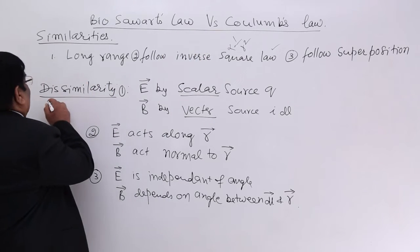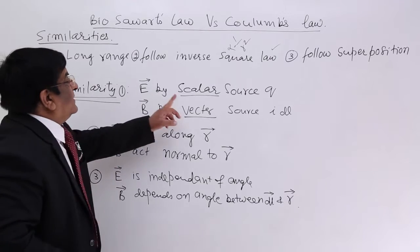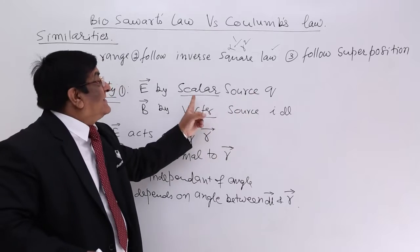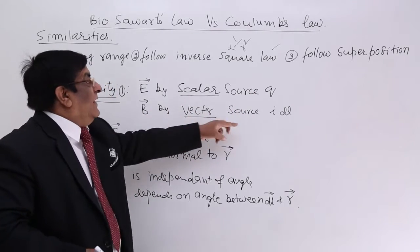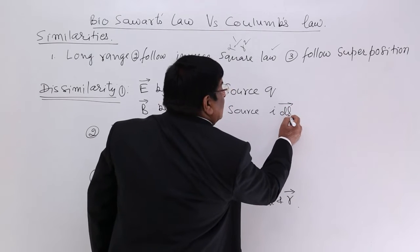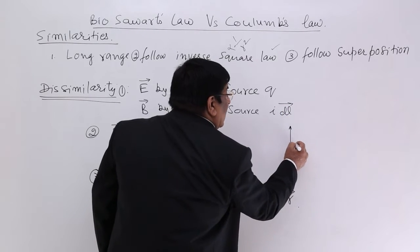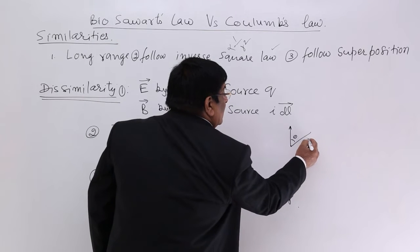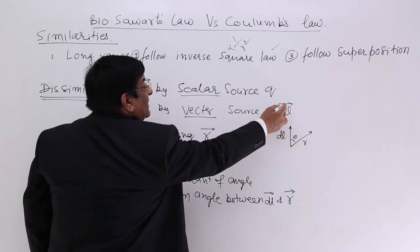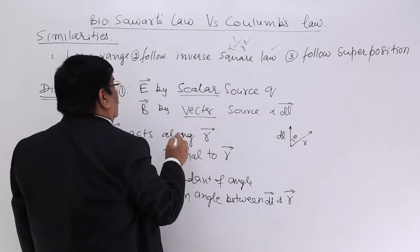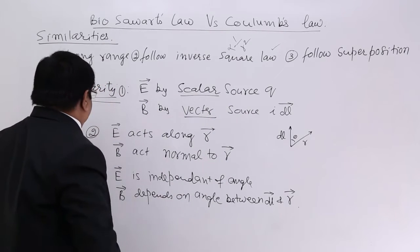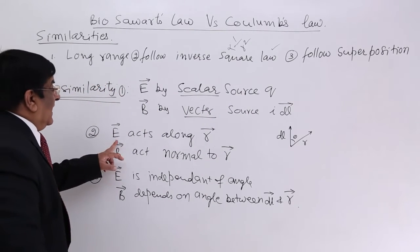Then there are dissimilarities, differences. The source of electric field is electric charge, which is a scalar quantity, but the source of magnetic field is IDL. This is a vector quantity because DL has got a particular direction. So this has got a particular direction. So this is a vector quantity. Source for B is a vector quantity. Source for E is a scalar quantity.